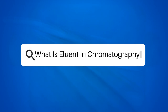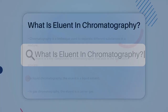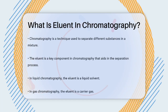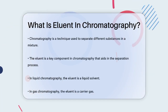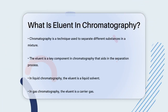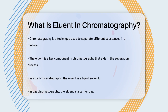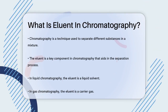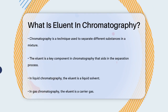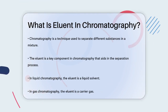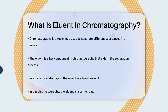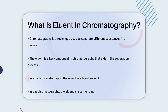What is eluent in chromatography? Imagine you have a mixture of different substances and you need to separate them to understand what each one is. This is where chromatography comes in, and a key player in this process is something called the eluent.